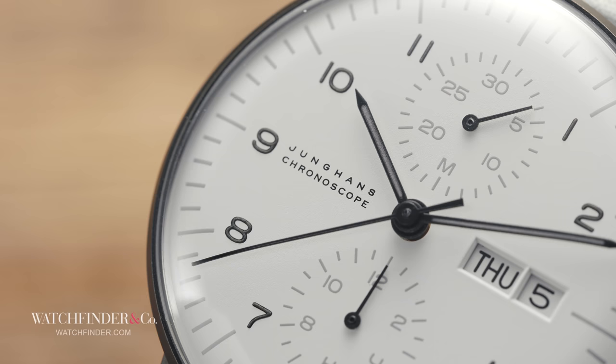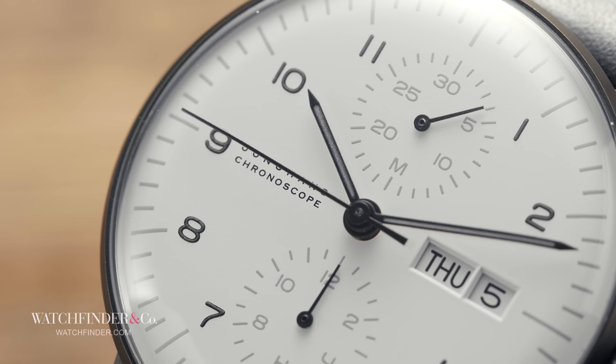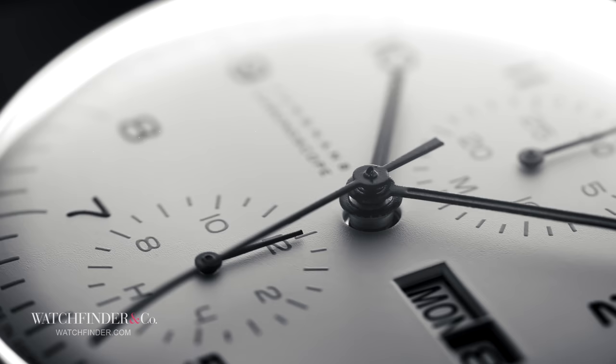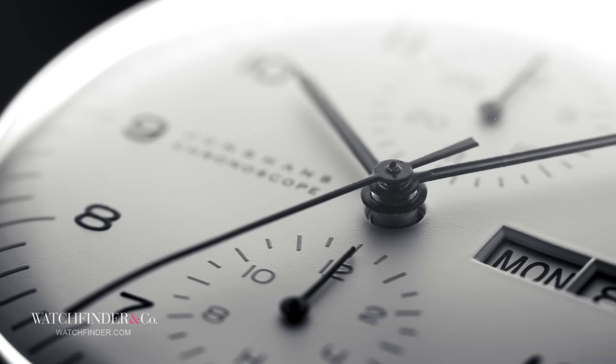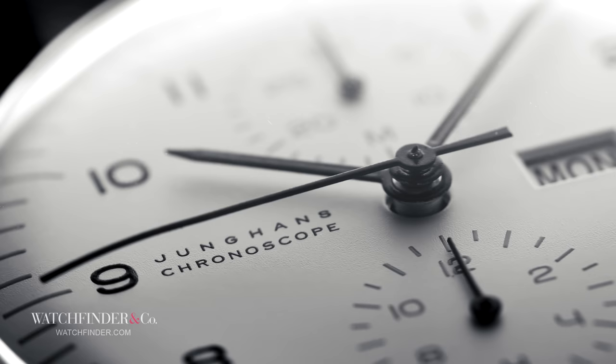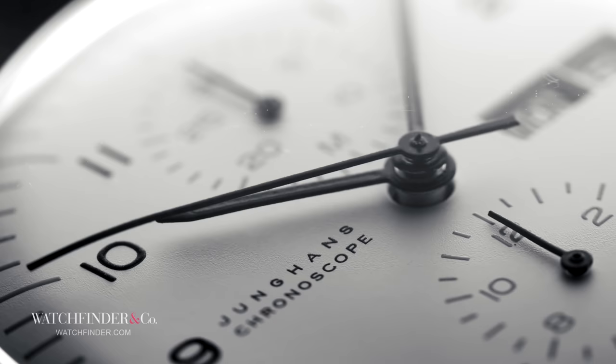Junghans came into being at the wish of Erhard Junghans in 1861. Erhard was German. Why am I telling you this? Because if there's one thing the Germans are exceptional at, it's doing things properly. With the help of his brother-in-law Jacob Zeller-Tobler, Erhard set about making watches with the techniques he'd learned during his time in America.